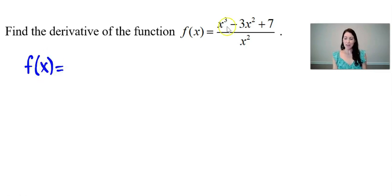equals and I'm going to take each of these three terms and divide it by x squared. So I would have x cubed over x squared minus 3x squared divided by x squared and finally plus 7 divided by x squared.